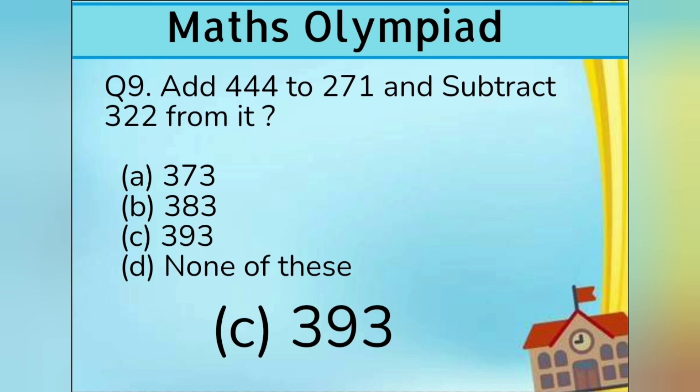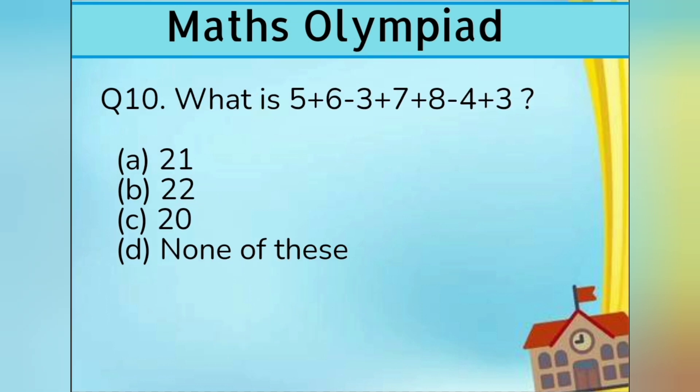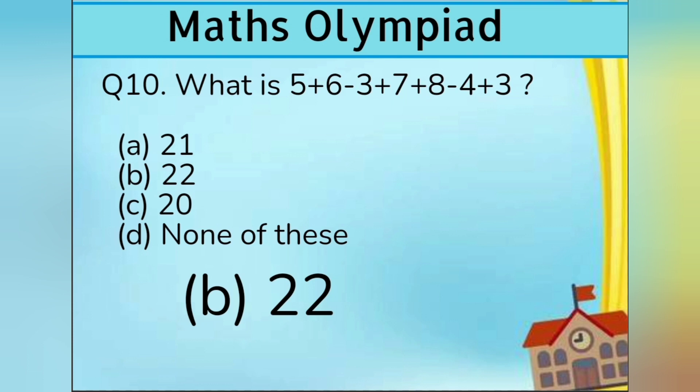Question number 10. What is 5 plus 6 minus 3 plus 7 plus 8 minus 4 plus 3? Option A 21, Option B 22, Option C 20, and Option D none of these. Answer is Option B 22.